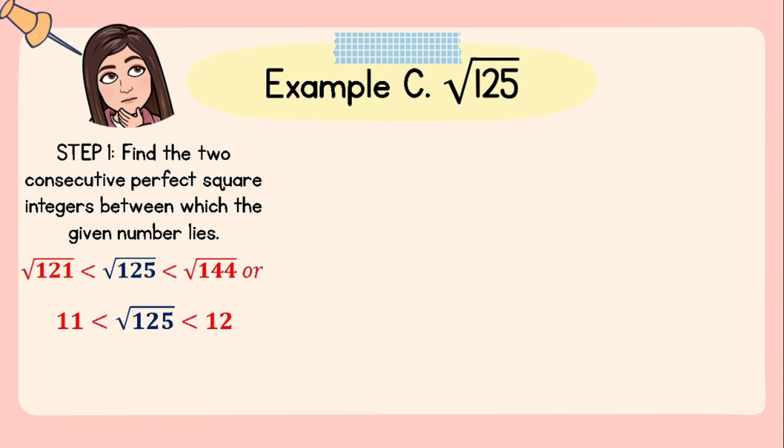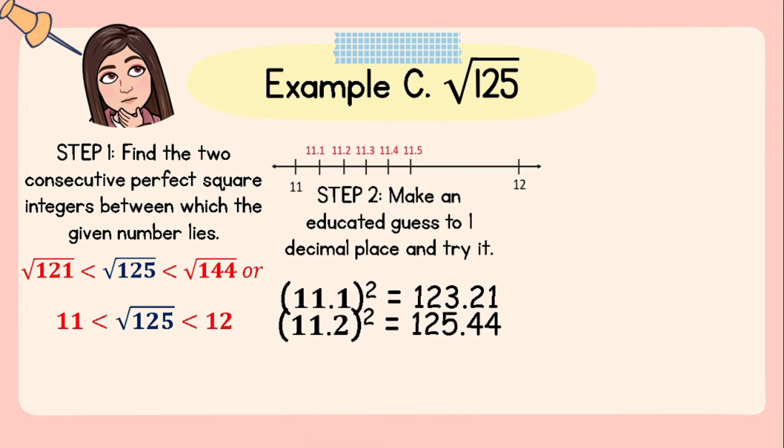Step number two: make an educated guess to one decimal place and try it. Since 125 is closer to 121 than 144, we can say that square root of 125 is closer to 11 than 12. We then square numbers closer to 11 with one decimal place: 11.1² = 123.21, 11.2² = 125.44. We stop at 11.2 because 125.44 already exceeded our target of 125.